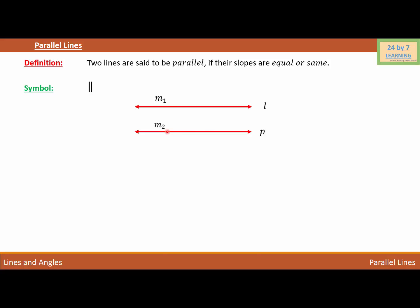Since we are trying to explain parallel lines, we are saying that line L is parallel to line P, and this is how we represent that two lines are parallel. If we want to say that two lines or two sides are parallel, we represent it with a symbol like this. I'm using two arrows in the middle of the lines to say that line L is parallel to line P.